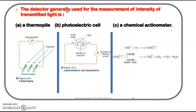Detectors are generally used for the measurement of intensity of transmitted light. There are three types of detectors: thermopile, photoelectric cell, and chemical actinometer. The chemical actinometer is made by mixing uranyl and oxalic acid, hence it is also called the uranyl oxalate actinometer.